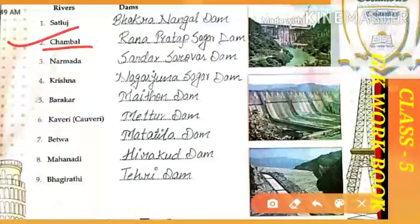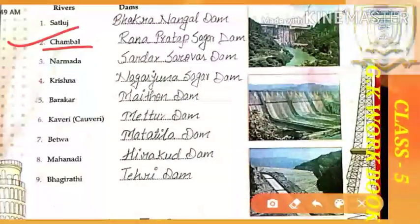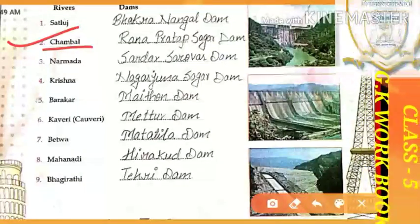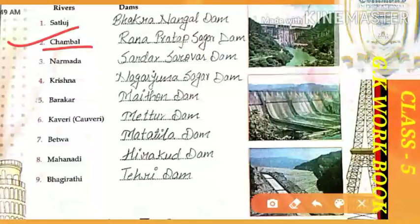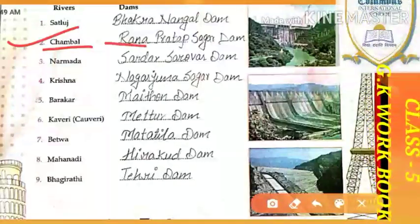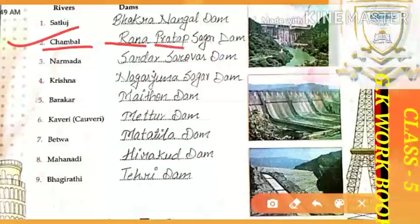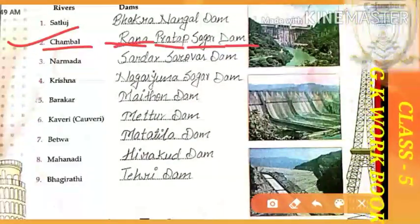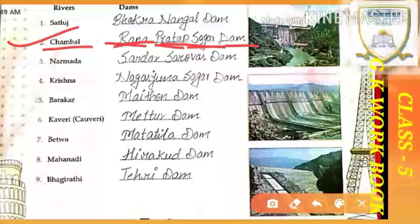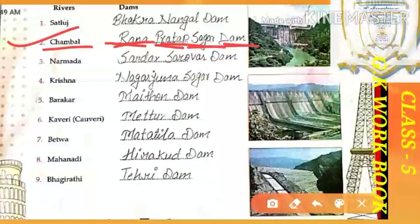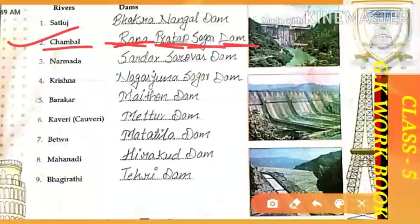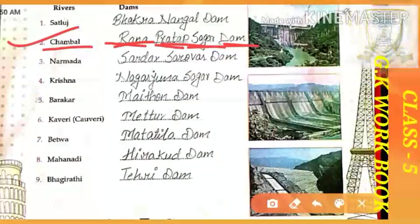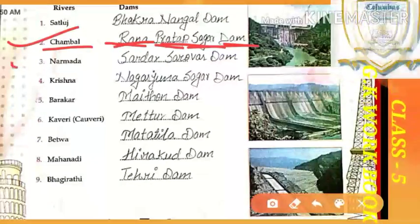The next river is Chambal, and the dam which is built on this river is Rana Pratap Sagar Dam. Rana Pratap Sagar Dam. Speak with me — Rana Pratap Sagar Dam. Clear? Okay, start now.